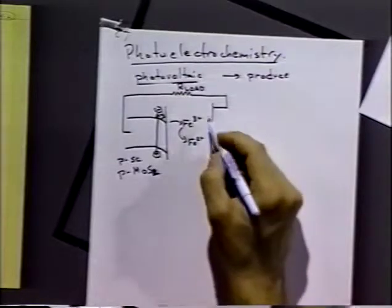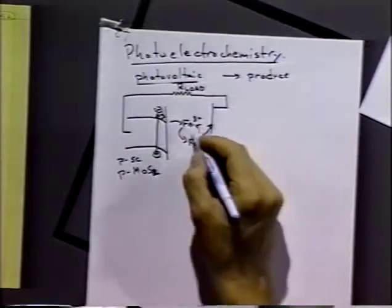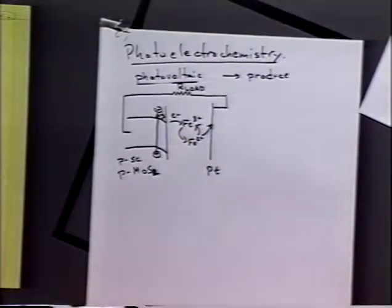convert them to iron two plus. The iron two plus now can go back to iron three plus by dropping that electron off at the second electrode, which, for example, might be platinum.